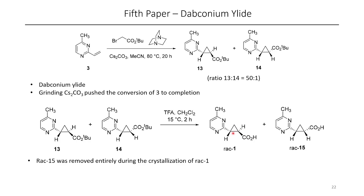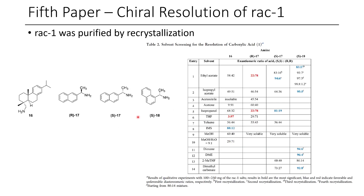Unfortunately, they had to do some sort of resolution. What they ended up finding was that using compound 18, they were able to crystallize out the desired enantiomer with decent selectivity. Following this overall protocol, the authors were able to produce multiple grams of the product, which could be pushed forward for subsequent testing.